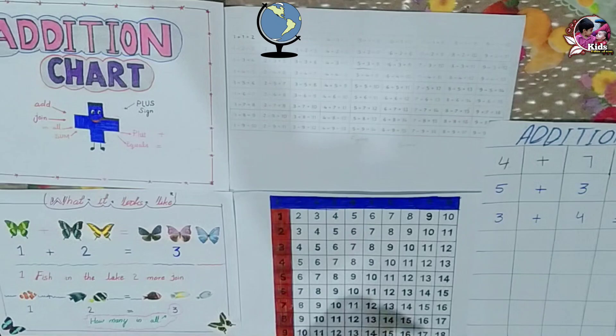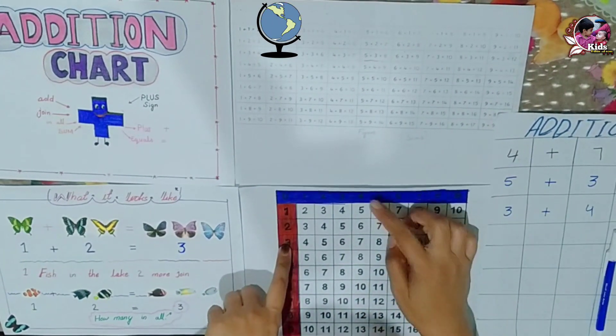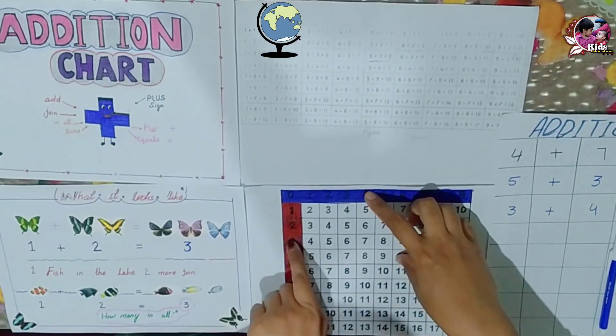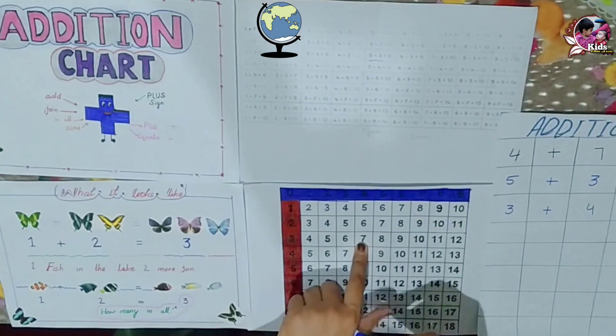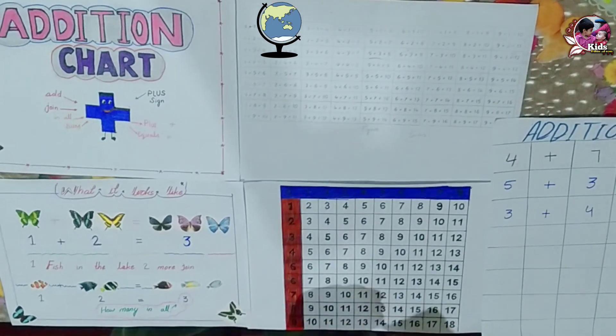In this case, we will have 3 on the vertical line and 4 on the horizontal line, and we will meet our fingers and the answer is 7.